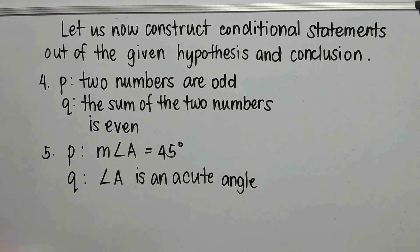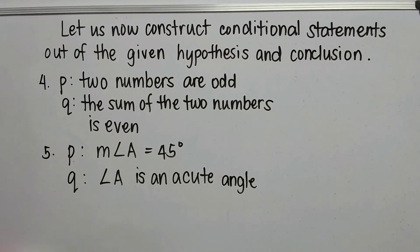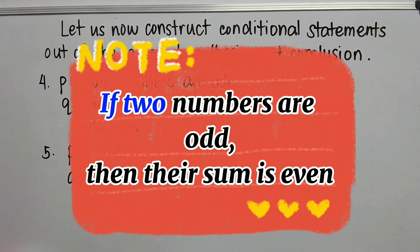Number four. P: two numbers are odd. Q: the sum of the two numbers is even. The if-then statement: if two numbers are odd, then their sum is even.